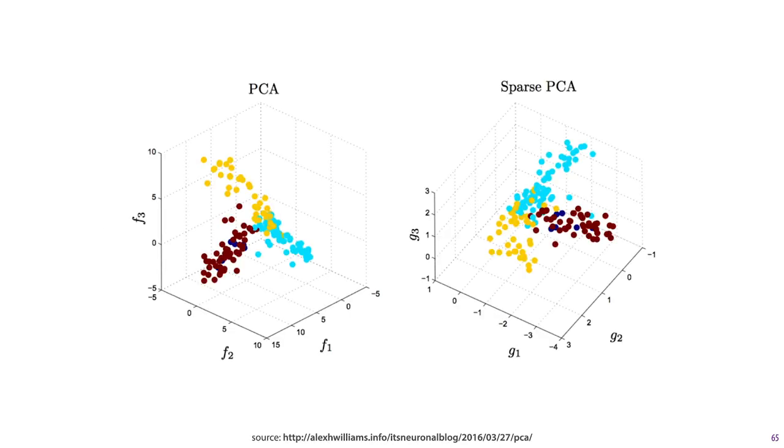Here's an example of a dataset reduced to three dimensions by sparse PCA and regular PCA, and it's a bit difficult to see, but the points in the sparse PCA should be more aligned to the axes.